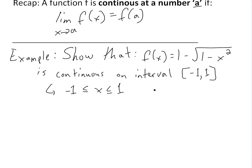Also note that this interval is exactly where the function is defined, because inside the square root we need the expression to be greater than or equal to 0, otherwise we get an imaginary number. That's why x must satisfy |x| ≤ 1. For example, if x = 3, then 1 - 3² = 1 - 9 = -8, which is not defined.